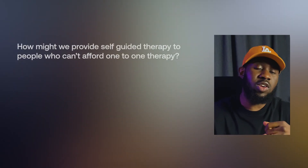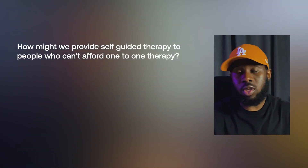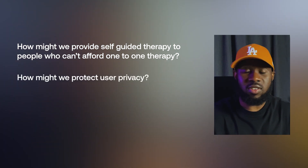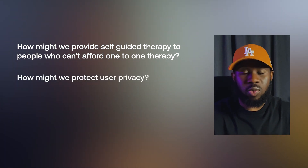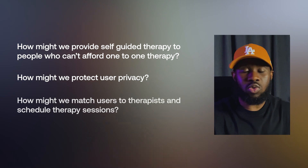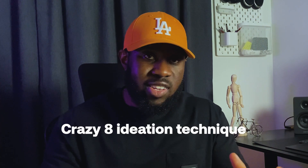For this project, the How Might We Questions are: number one, how might we provide self-guided therapy to people who can't afford one-to-one therapy? Number two, how might we protect user privacy? Number three, how might we match users to therapists and schedule therapy sessions? To answer these questions, I use the Crazy 8 Ideation Technique, which I absolutely love.